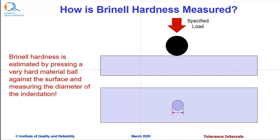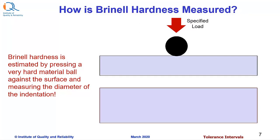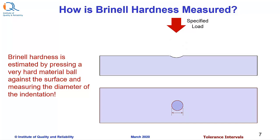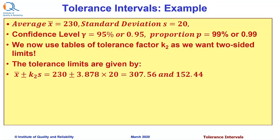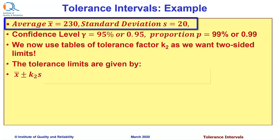Let us see how Brinell hardness is measured. Brinell hardness is estimated by pressing a very hard material ball against the surface and measuring the diameter of the indentation. Now let us understand how to use the tables for the given problem. Average X̄ is equal to 230, and standard deviation of the 15 samples S is 20.